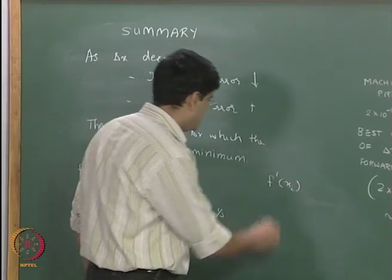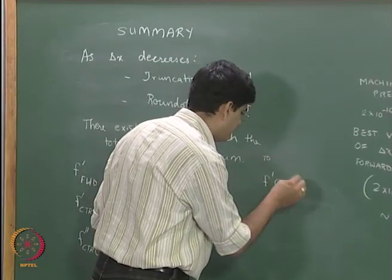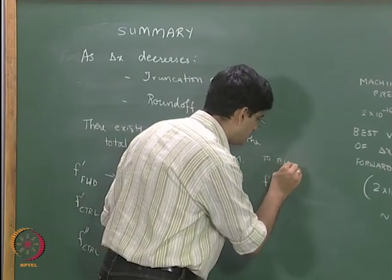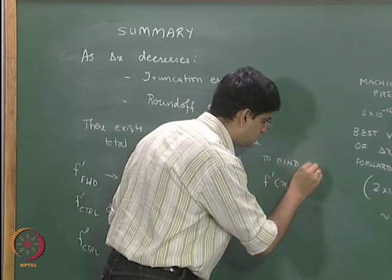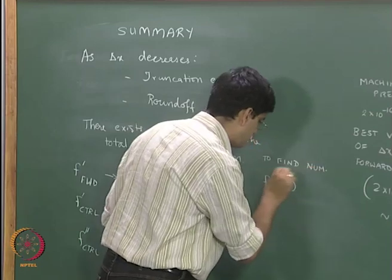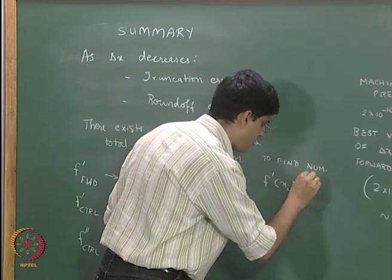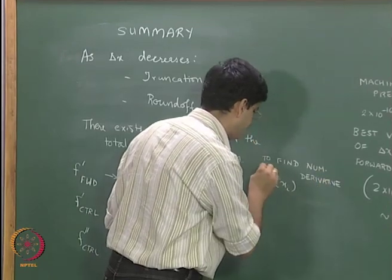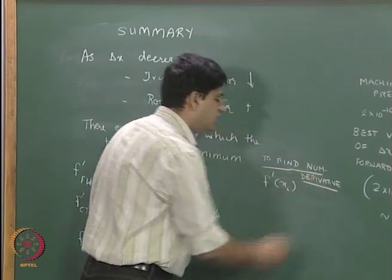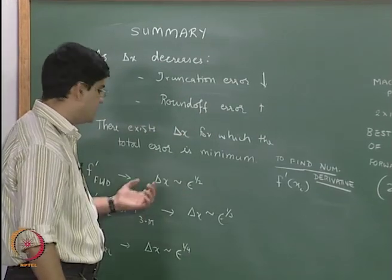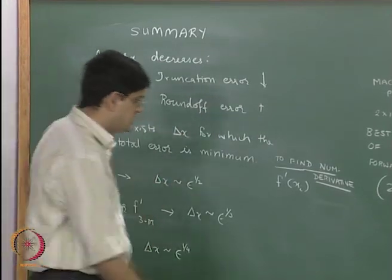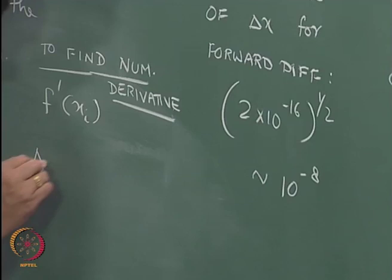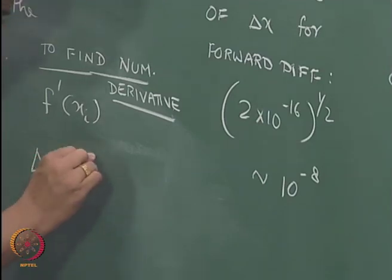So, if we want to find the numerical derivative of f dash, if we select, let us say we have selected the forward difference scheme, then our delta x is going to be equal to...